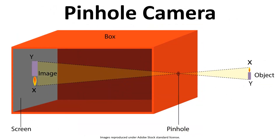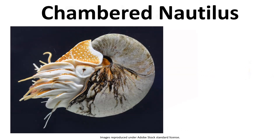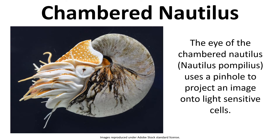We could take this sort of image with a pinhole camera — a box completely sealed so that no light can get in other than through the pinhole. There's a screen, typically made from thin paper so we can see the image from outside the box, and an object outside whose light passes through and forms an image on the screen. This can be made at home or for science projects quite easily with household objects. Another example of pinhole projection is the chambered nautilus, which actually uses a pinhole for its eye — it has no lens, just a hole, and light forms an image on light-sensitive cells.